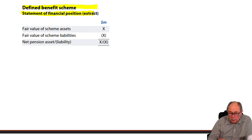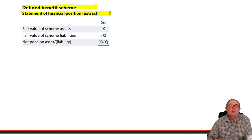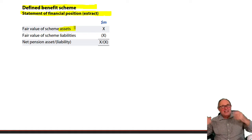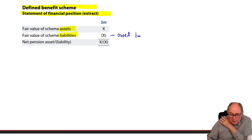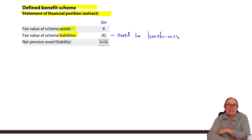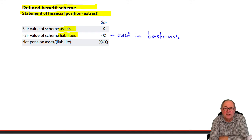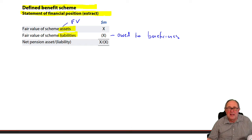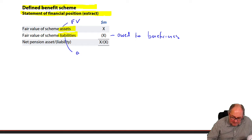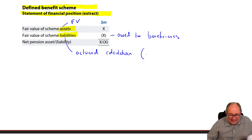In the balance sheet, the pension plan will have some assets which have been invested in equities, bonds and real estate. It'll also have some liabilities — the amount actually owed to the beneficiaries. If you've been working somewhere for five years there'll be a liability in respect of you; if you've been there 40 years it'll be enormous. The assets are measured at market value or fair value. The liabilities are an actuarial calculation measured at present value.